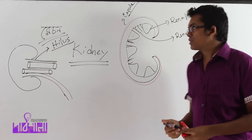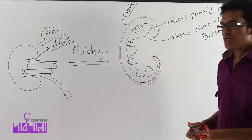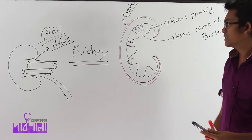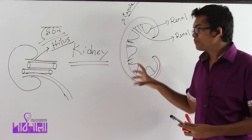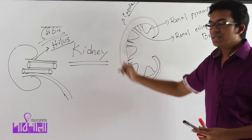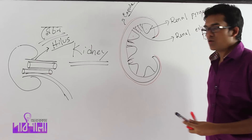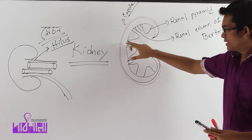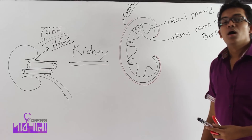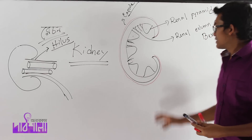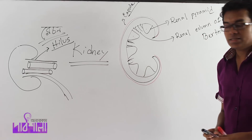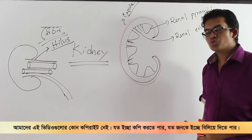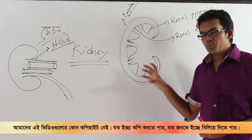That is the kidney structure which is bi-lobed. This is the renal cortex. This is the renal pyramid, which forms the renal medulla. This is the renal column of Bertini. This is the renal medullary region. So to summarize: renal cortex on the outside, renal pyramid in the medulla, and column of Bertini in between the pyramids.